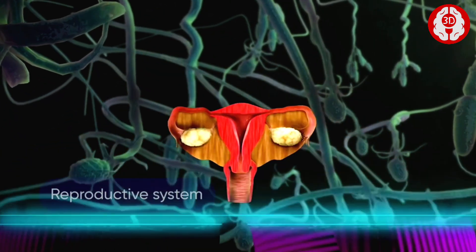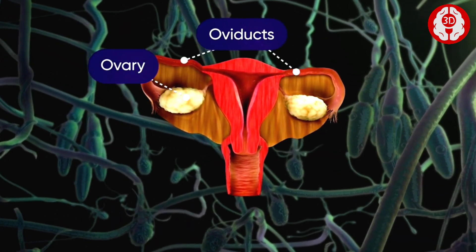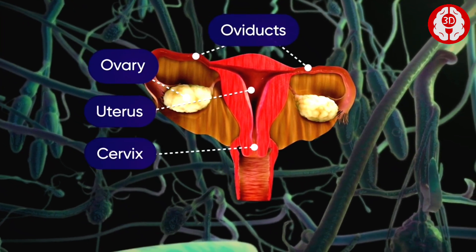A female reproductive system comprises ovaries, oviducts, uterus, cervix and vagina.